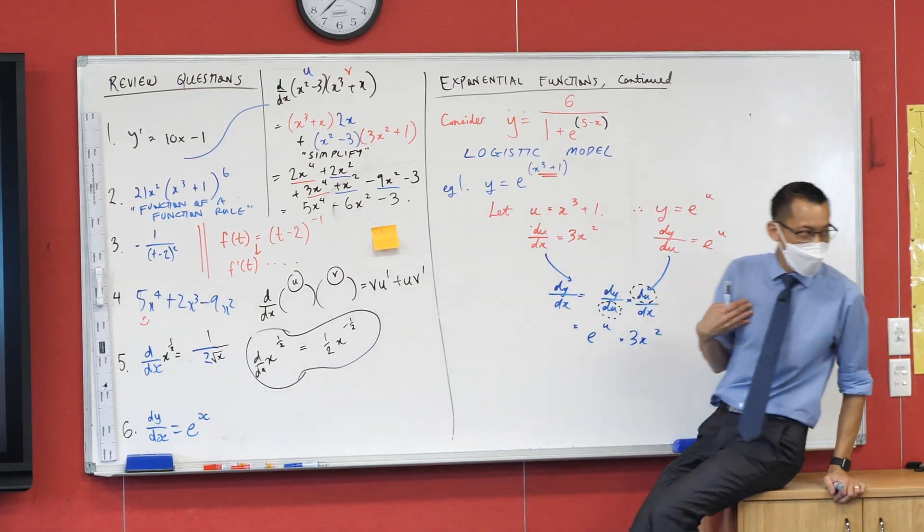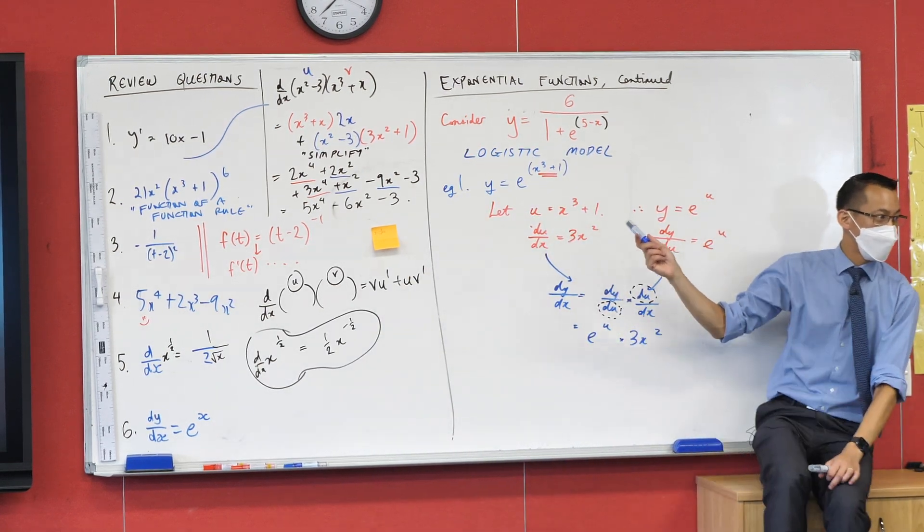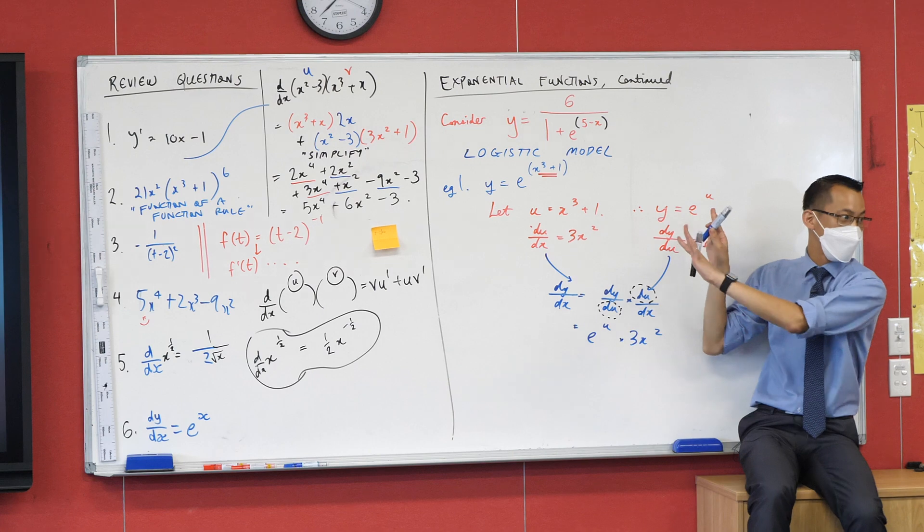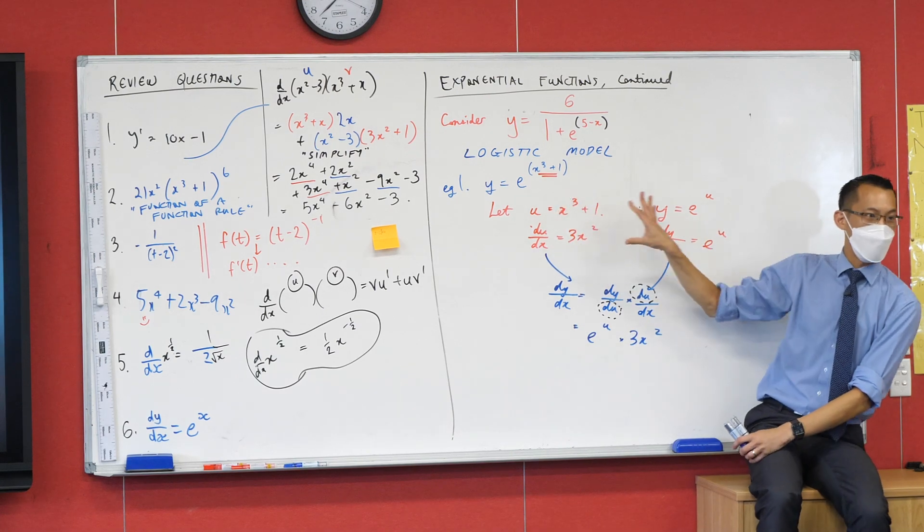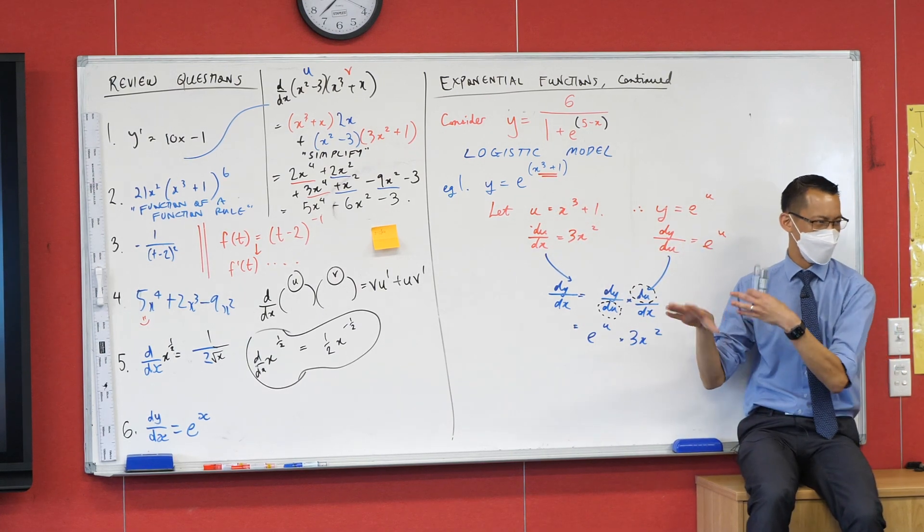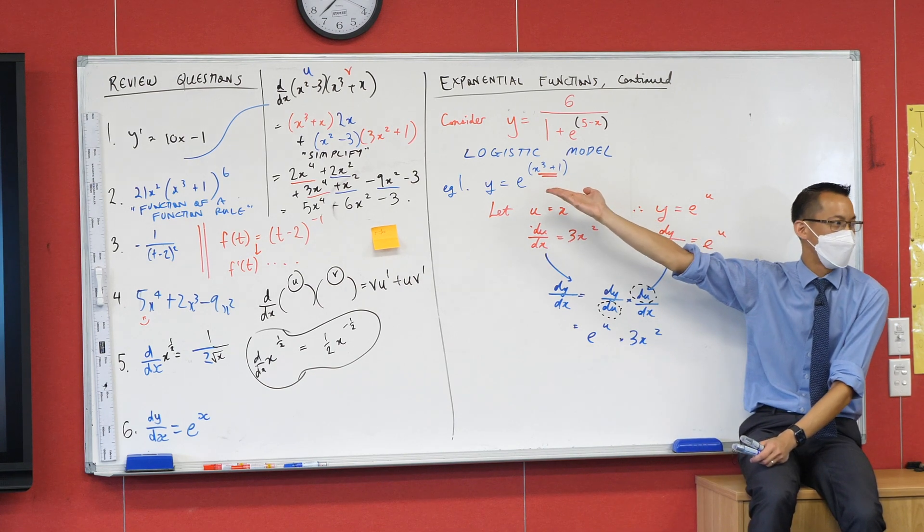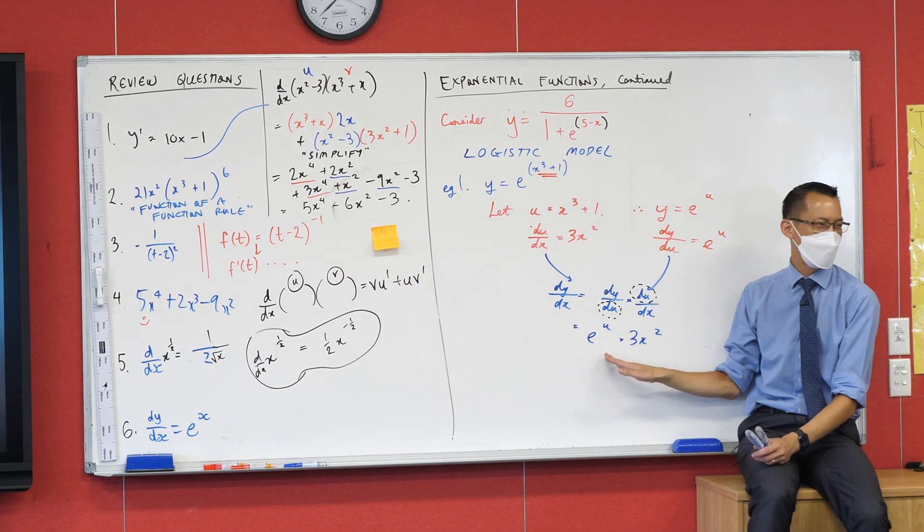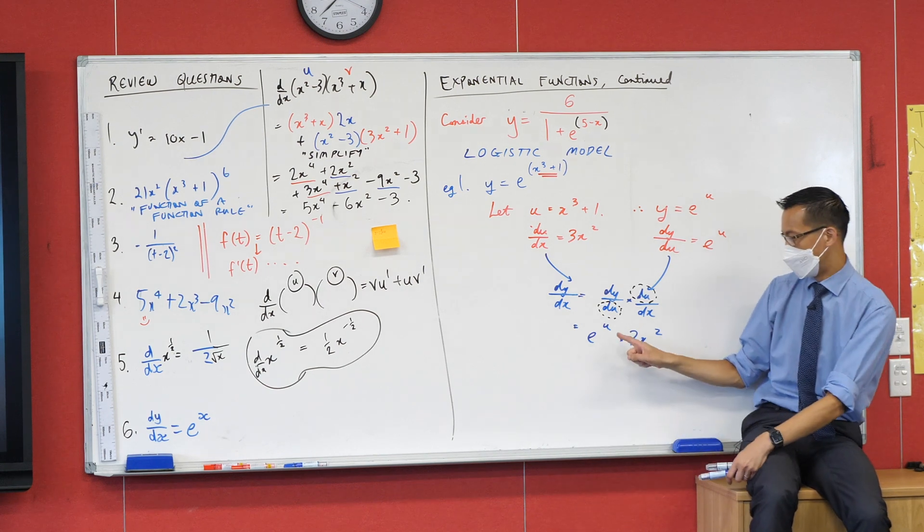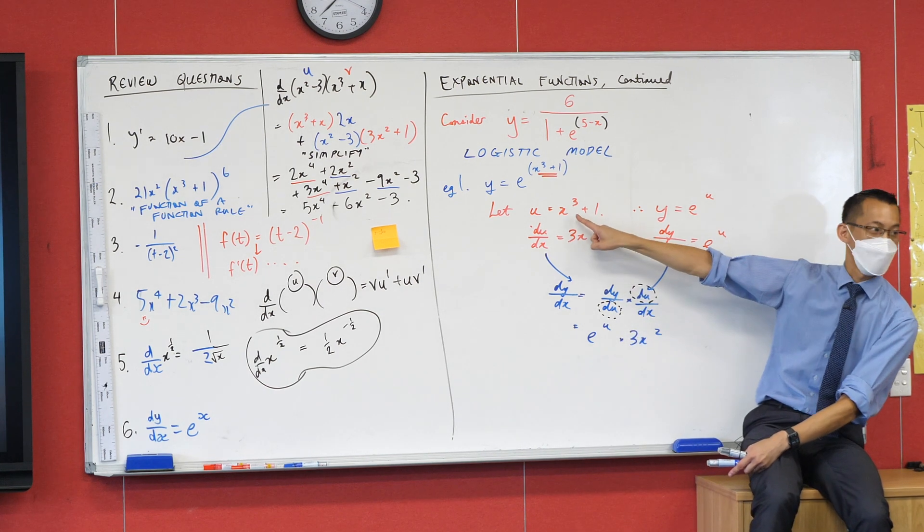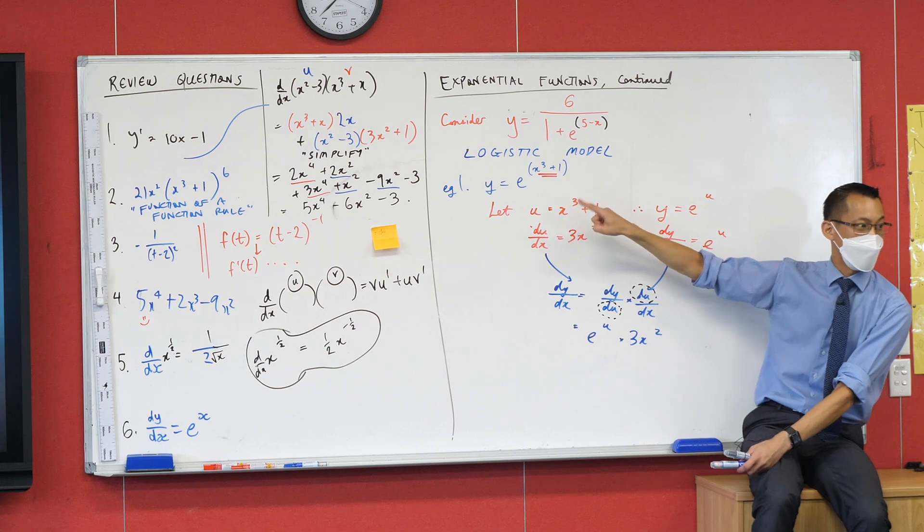The only thing I need to do is we introduced this letter u, remember that? It's just so that we could make it a bit easier for ourselves. All this red working we kind of did just to make it a little bit simpler, but the question never had any u's in it to begin with. So I should probably put it back the way it was. I'll put that u back to being what I defined it to be: x cubed plus 1.